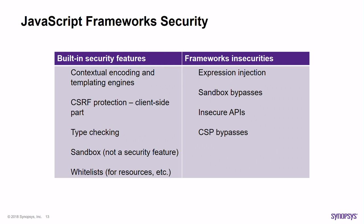There are also insecurities that come with frameworks. Expression injection: if a framework has an expression language, you can have a new type of injection. Sandboxes can be bypassed. Some frameworks have dangerous APIs that shouldn't be used — like dangerouslySetInnerHTML in React or trustAs in Angular. And CSP bypasses: even with a strong CSP policy and no inline scripts, some frameworks like jQuery, Ember, and Angular had bypasses where you inject a framework element that gets interpreted as a script.